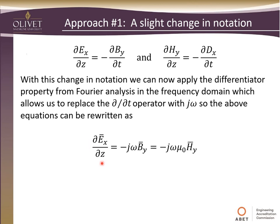When we do that, the partial derivative of the electric field with respect to z can now be written as minus j*omega times the magnetic flux density. Since we're in the Fourier domain, we can use this multiplier. And we can relate the flux density to the magnetic field intensity via the permeability term. Likewise, we can rewrite our second equation, replacing the time derivative by multiplying by j*omega. The displacement vector and the electric field vector are related by permittivity. Both permeability and permittivity are characteristics of the medium we'll be propagating in.